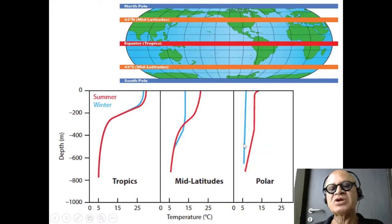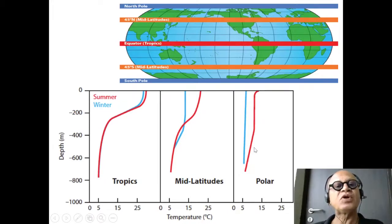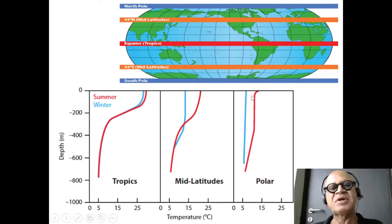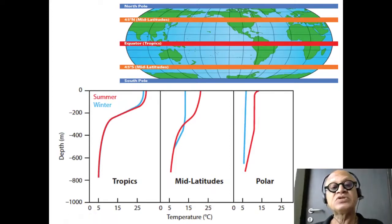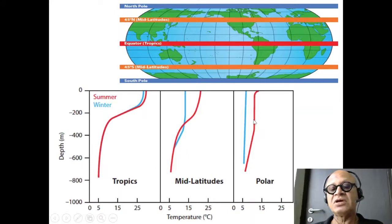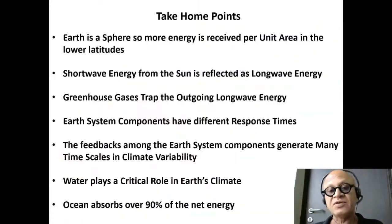Polar latitudes do have seasonality depending on how far north you go. They get completely mixed down in the winter months, and in the spring and summer months — when you get up to twenty-four hours of daylight — you do get stratification with some warming, depending on ice cover and many other things. Nonetheless, there is seasonality at pretty much all latitudes, though it is stronger in the mid-latitudes than in the tropics or polar latitudes, for different reasons.